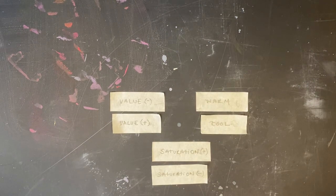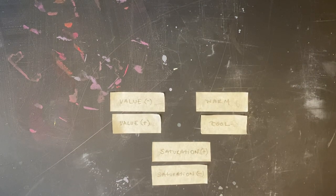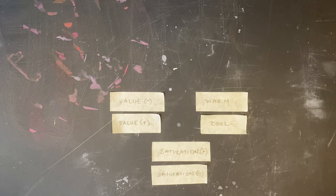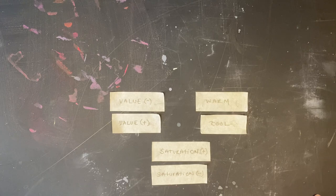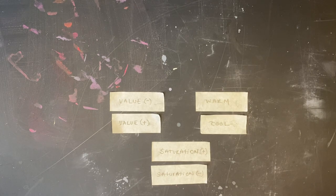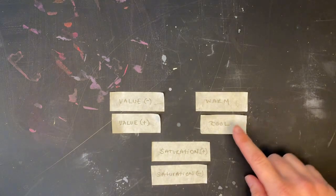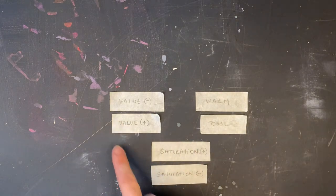This is our Color Hunt project, and what we're going to do is look at the different hue families. I'm talking about red, yellow, orange, green, blue, and violet, and we're going to collect objects from around our house and start to evaluate them based on color temperature, value, and saturation.